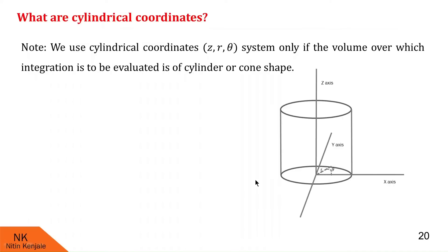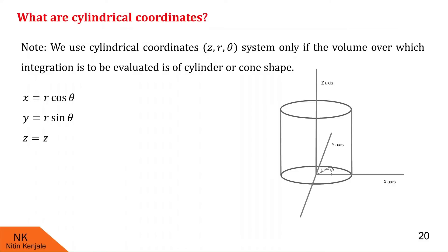Now let us discuss the relation between Cartesian coordinates X, Y, Z and cylindrical coordinates R, Theta, and Z. Here X is equal to R cos(theta), Y is R sin(theta), and Z is equal to Z. This is the relation between Cartesian and cylindrical coordinate systems. Note that the order of evaluation dx dy dz in terms of cylindrical coordinates is given by R dr dtheta dz. This R is due to the Jacobian.